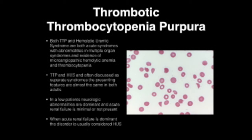The last topic is thrombotic thrombocytopenia purpura, or TTP. Both TTP and hemolytic uremic syndrome are acute syndromes with abnormalities of multiple organ systems, evidence of microangiopathic hemolytic anemia, and thrombocytopenia. TTP and HUS are often discussed as separate syndromes. In adults, the presenting features are almost the same. In some patients, neurological abnormalities are dominant and acute renal failure is minimal or absent. When acute renal failure is dominant, the disorder is usually considered HUS.